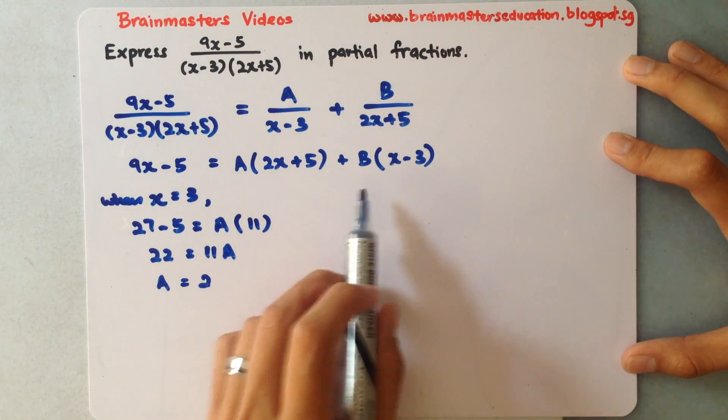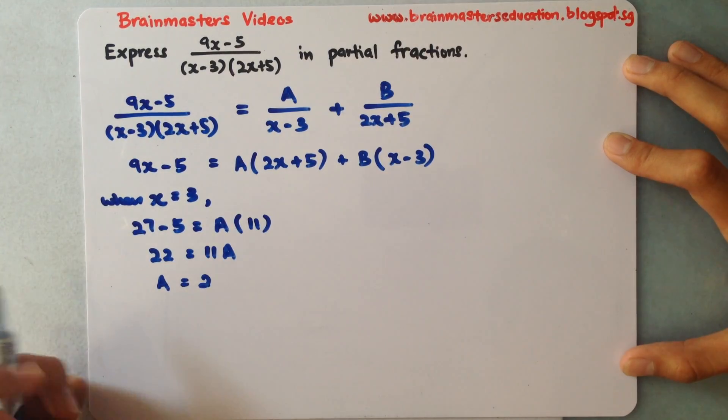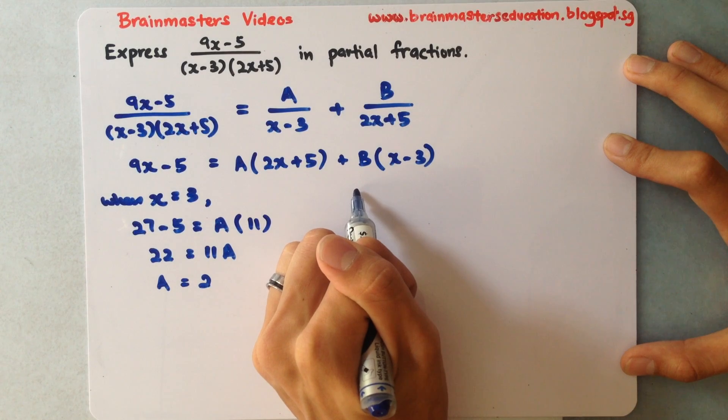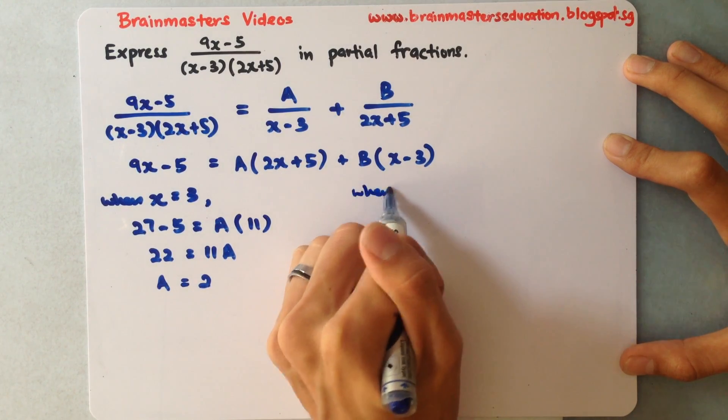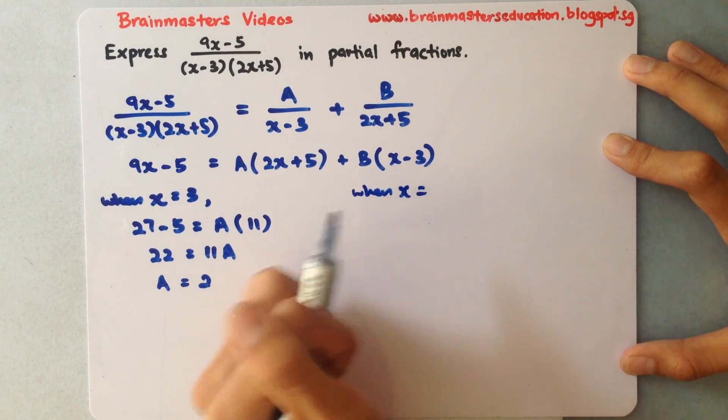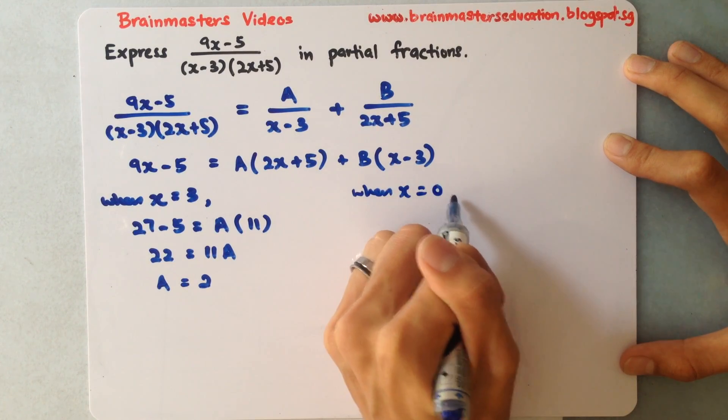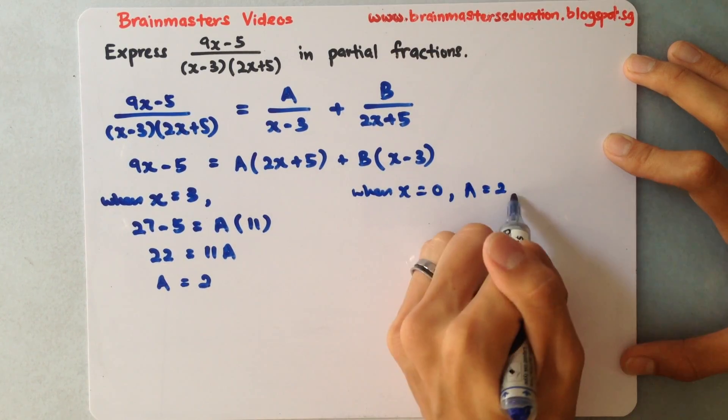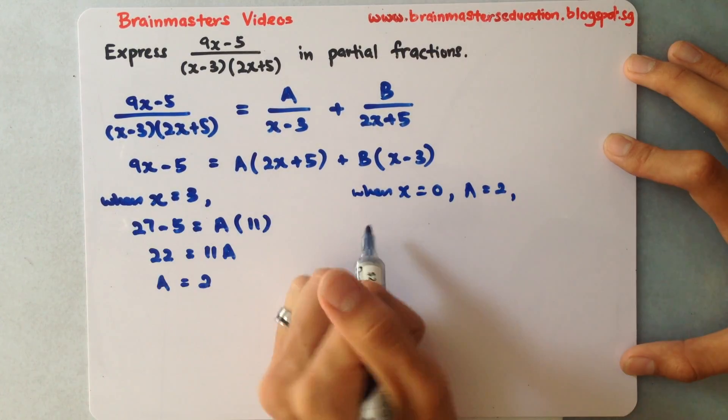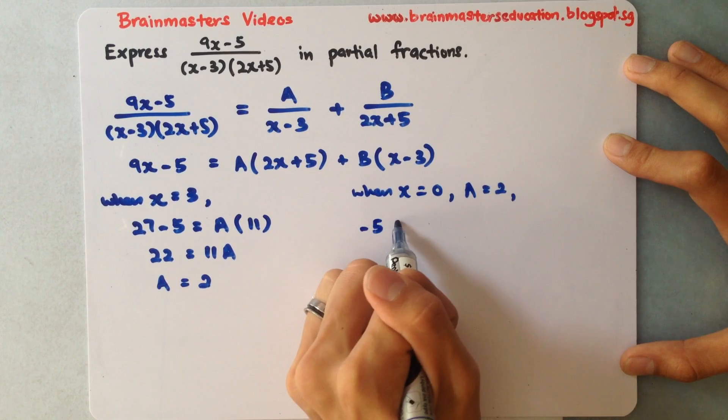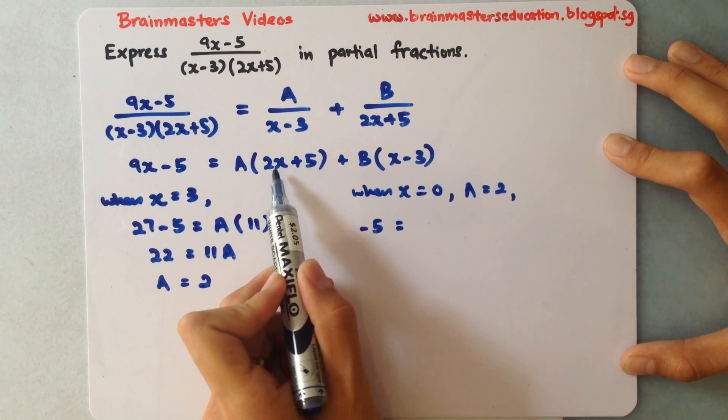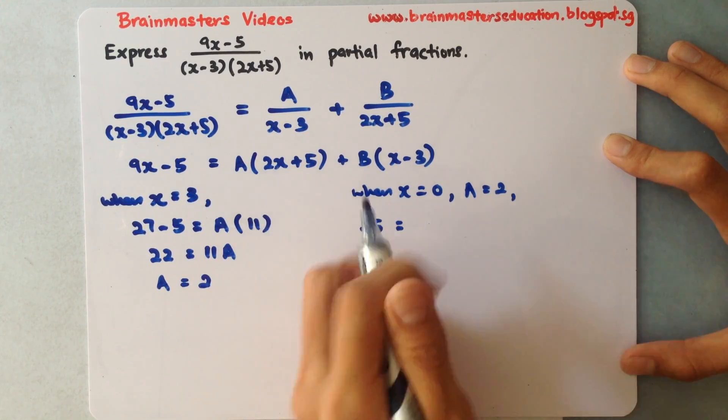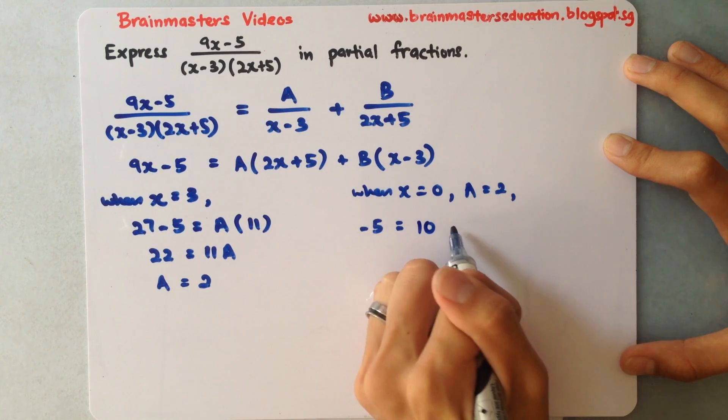Once I got one unknown, I can let x equal 0, which will be easy to calculate, and I'll substitute A equals 2 inside. This will be -5. When x is 0, this will be 5 times 2 which is 10, and then multiply to B and -3.